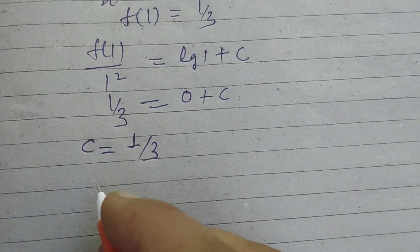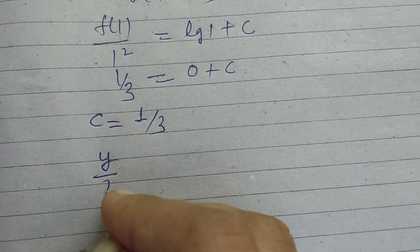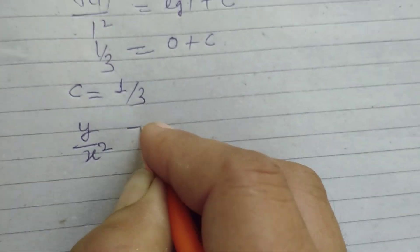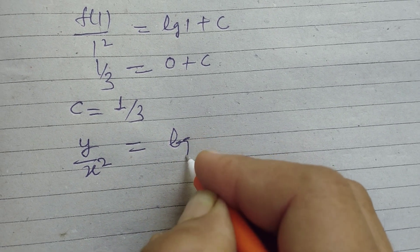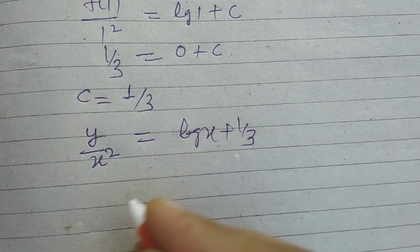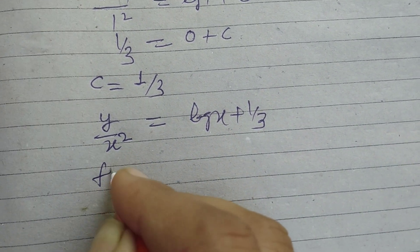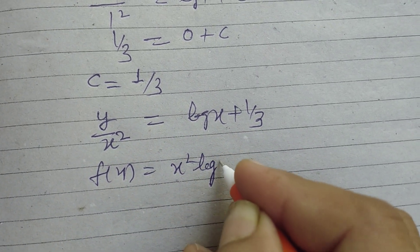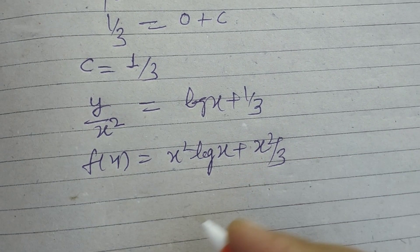Putting these values we got y/x² = log x + 1/3, and y is f(x). Cross multiplying: f(x) = x²log x + x²/3.